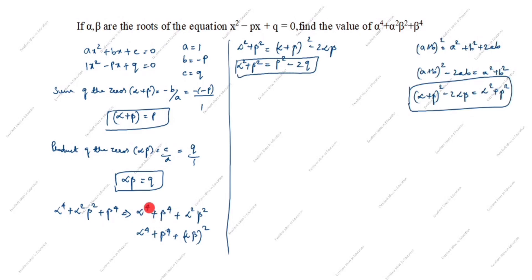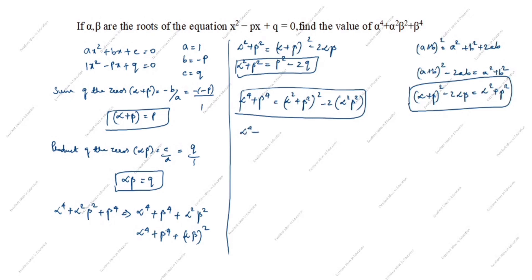But we need alpha⁴ + beta⁴. The formula for alpha⁴ + beta⁴ is (alpha² + beta²)² - 2·(alpha·beta)², where we write alpha²·beta² as (alpha·beta)². We already calculated alpha² + beta² = p² - 2q. So alpha⁴ + beta⁴ = (p² - 2q)² - 2·q².